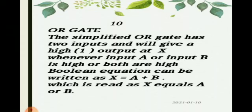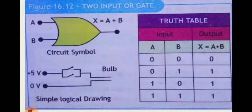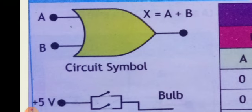The second is the OR gate. The simplified OR gate has two inputs and will give a high output at x whenever input A or input B is high, or both are high. The Boolean equation can be written as x equals A plus B. Remember that the dot is used for the AND gate and the plus symbol is used for the OR gate, which is read as x equals A or B. The circuit symbol of the OR gate is shown on your screen.